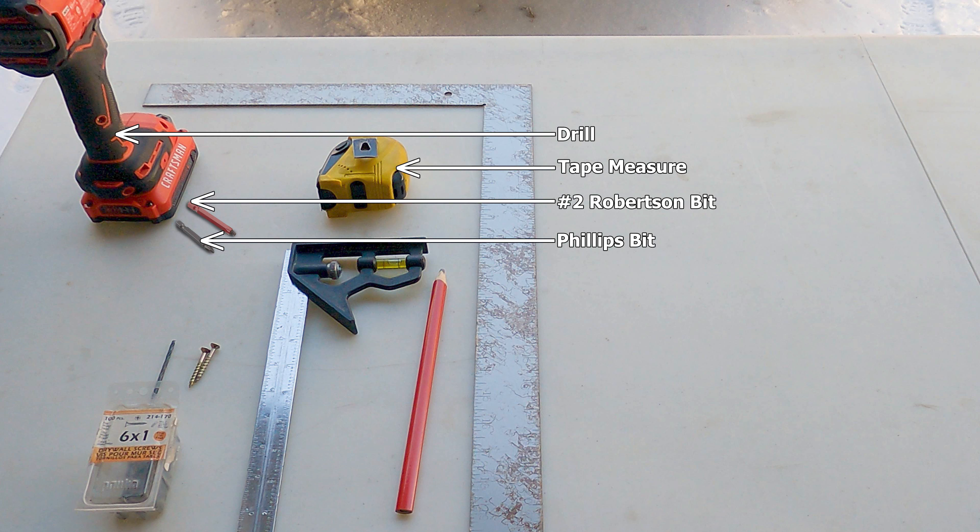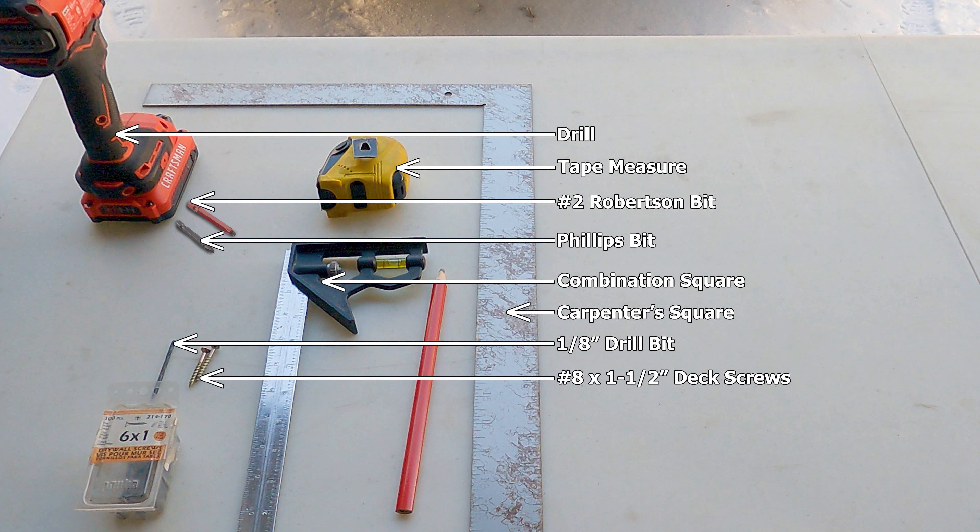For tools, fasteners, and other materials, I'll be using an electric drill, a tape measure, a number two Robertson bit for the deck screws, a Phillips bit for the drywall screws, a combination square, a carpenter square, a one-eighth drill bit for the screw pilot holes in the base, number eight by one and a half deck screws to fasten the base to the two-by-four upright, number six by one inch drywall screws for fastening the brackets, and a pencil.